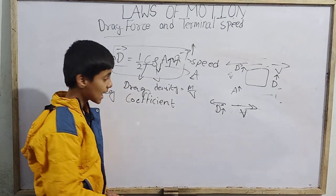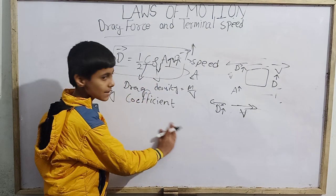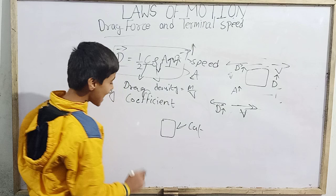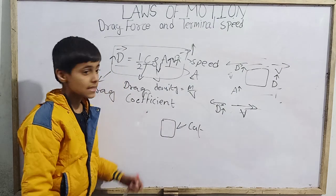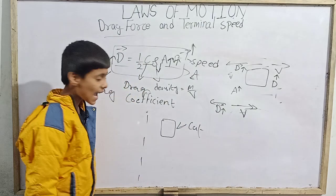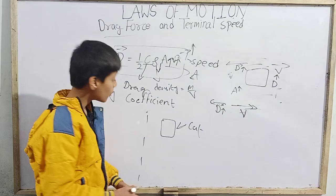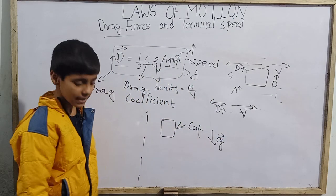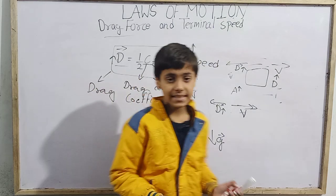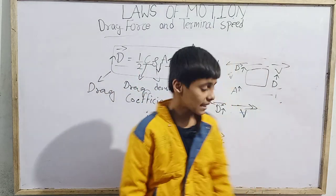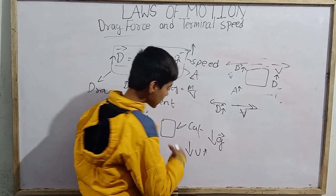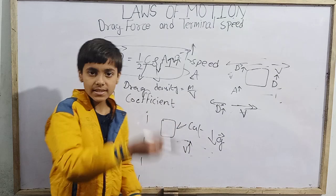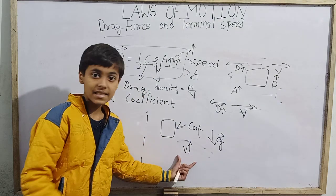Now consider a cat falling from a very high distance. As the cat falls lower and lower, its speed increases because of the downward acceleration due to gravity — 9.8 meters per second squared. After falling a very long distance, the cat's speed becomes very high. As speed increases, drag force also increases, since drag force depends on v squared.